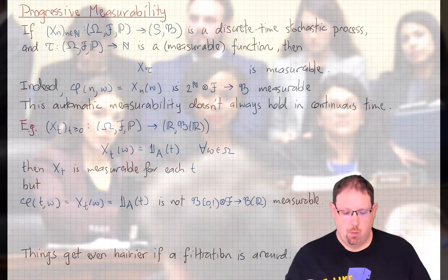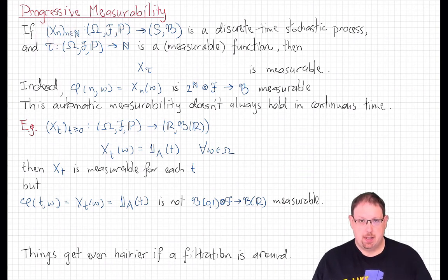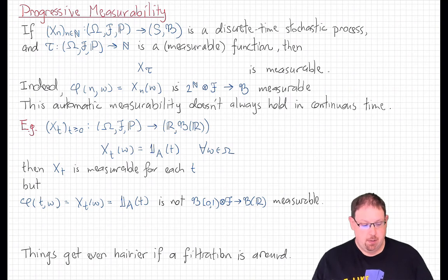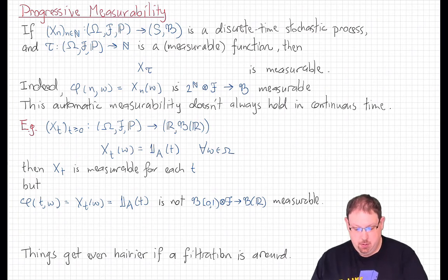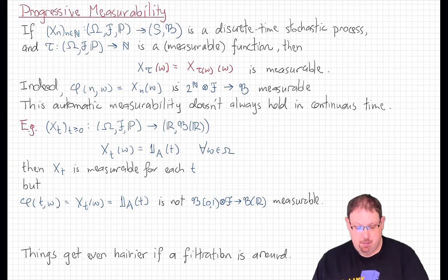Before we do that, we have to struggle with one important measurability issue. When we talked about evaluating a discrete time stochastic process at a random time, there was really no issue. We had our stochastic process X_n — a sequence of random variables all defined on the same probability space, taking values in the same state space — and then some natural number-valued random variable on that same probability space. It was then quite straightforward to compose the two. X_τ is a new random variable whose value at an outcome ω was just X at τ(ω). That's some particular X_n evaluated at ω, and it was shown to be a new measurable random variable, measurable with respect to the same sigma fields.